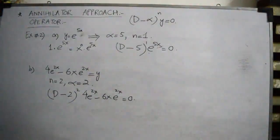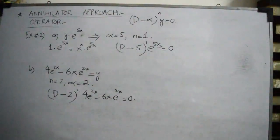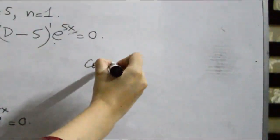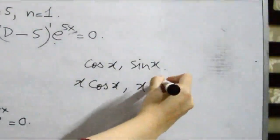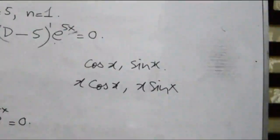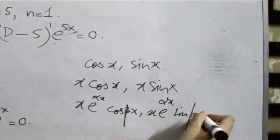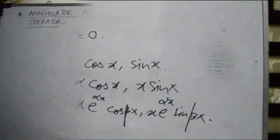We have now learned about the annihilator operators for polynomial functions and for exponential functions, including x times exponential functions. Now we need to think about what the annihilator operator will be for functions containing trigonometric terms like cos(x), sin(x), x·cos(x), x·sin(x), or multiplied with exponentials like x·e^(αx)·cos(βx) and x·e^(αx)·sin(βx).